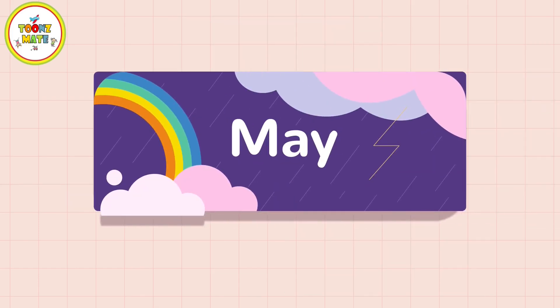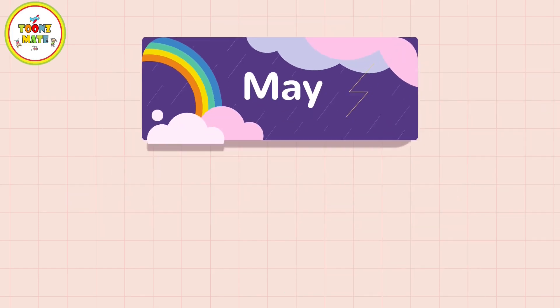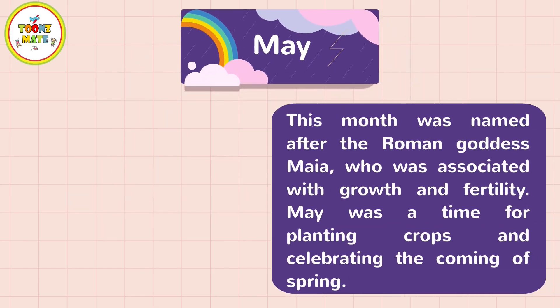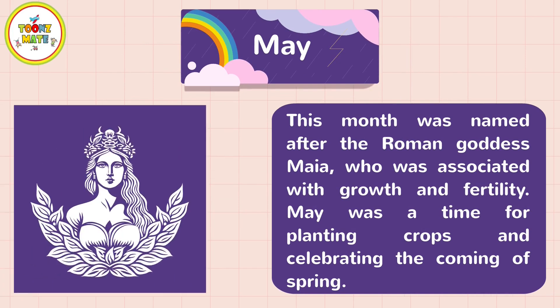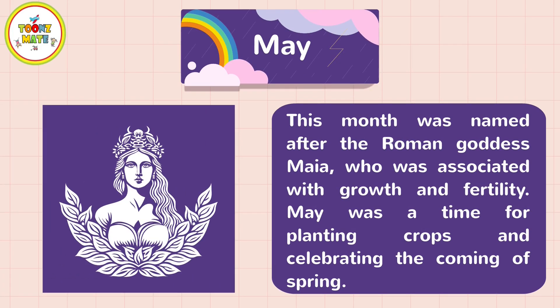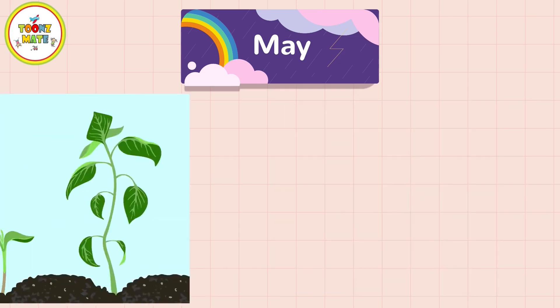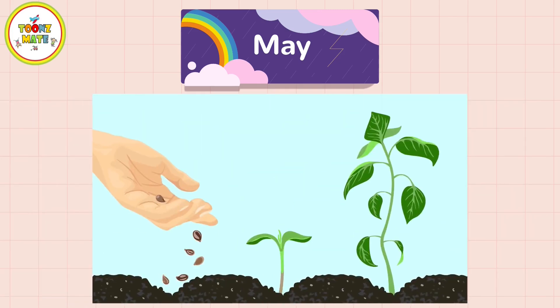May. This month was named after the Roman goddess Maya, who was associated with growth and fertility. May was a time for planting crops and celebrating the coming of spring.